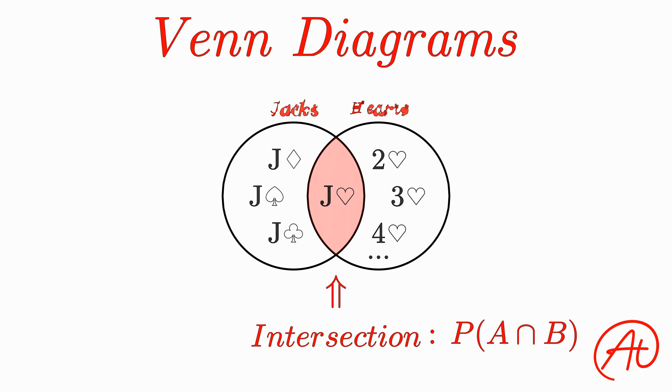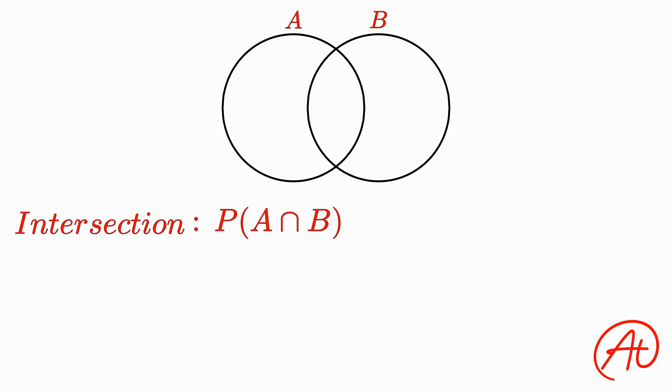Now that we covered the intersection of A and B, we can go over the union of A and B. The union is written like this, which is read as the probability of A or B, and just like it sounds, it represents the probability of A or B occurring.